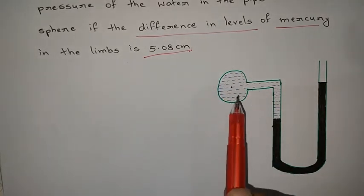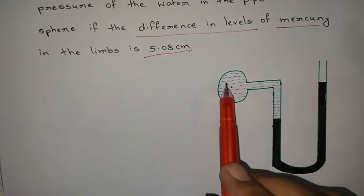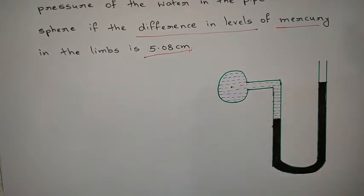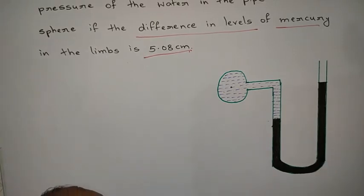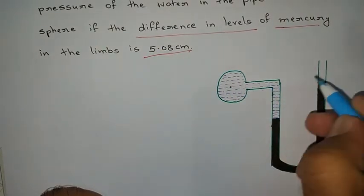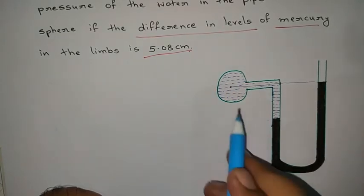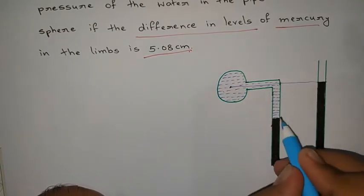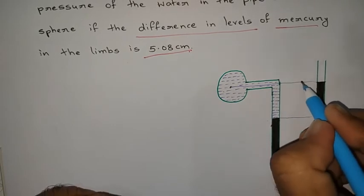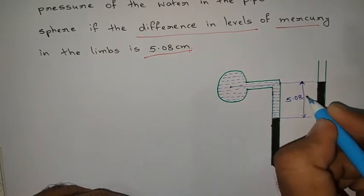The U-tube manometer is connected to the pipeline whose water pressure we need to measure. Water is flowing in this pipeline. Whenever you connect the U-tube manometer to this pipeline, we can observe a deflection in the manometer reading. The center of the pipeline coincides with the surface of the mercury in the right limb.